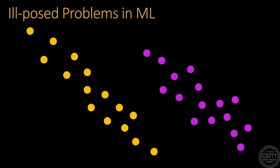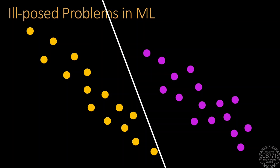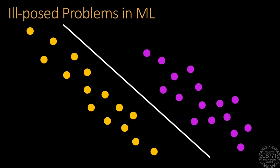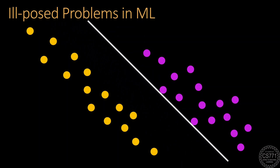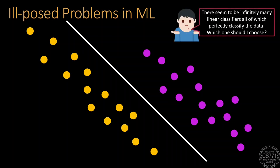We are given binary classification data in the form of yellow and purple colored points. If our only goal is to learn a linear classifier that perfectly classifies all the points — keeping all the yellow points on one side and the purple points on the other — then we find that there are infinitely many such classifiers. Some make confident predictions by staying away from the points, whereas others make brittle predictions since they pass very close to some points. Each one of them offers perfect classification. In such a situation, we are said to have an ill-posed problem on our hands.